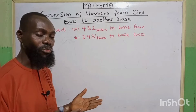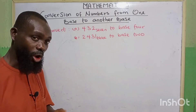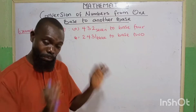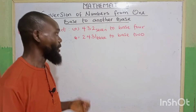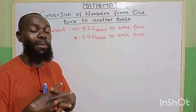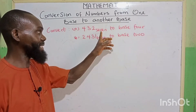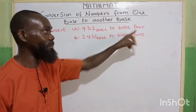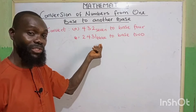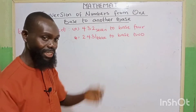Previously, we were able to convert from base 10 to other bases, or from other bases to base 10. When you look at the two, they both involve base 10. But now we are converting from one base to another, so we are going to combine the two. We convert from base 7 to base 10, then from base 10 we move on to base 4. Likewise, we are going to convert from base 3 to base 10, then from base 10 finally to base 2. Let's get started.